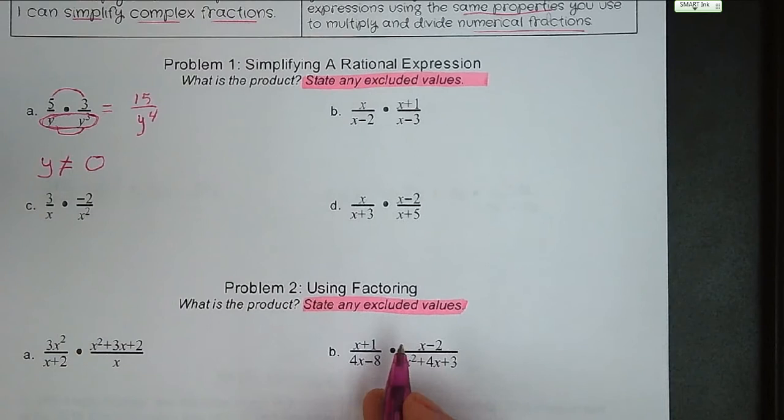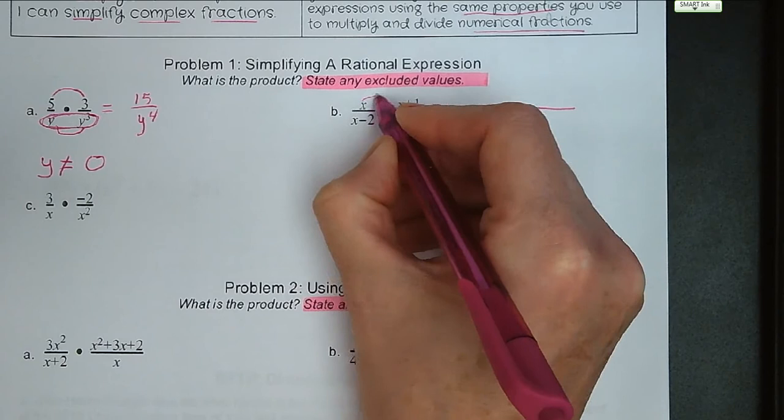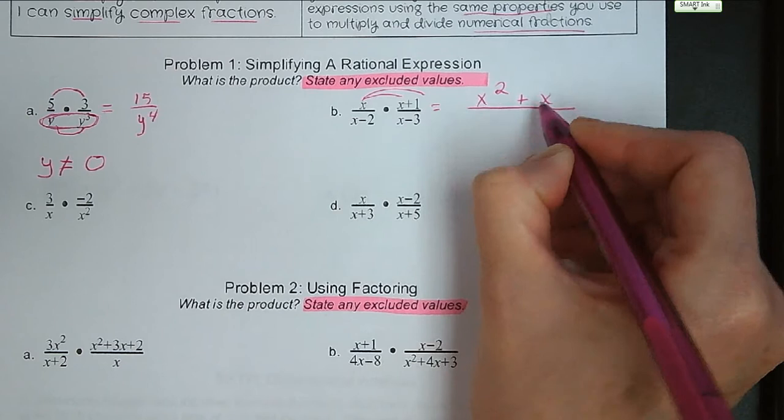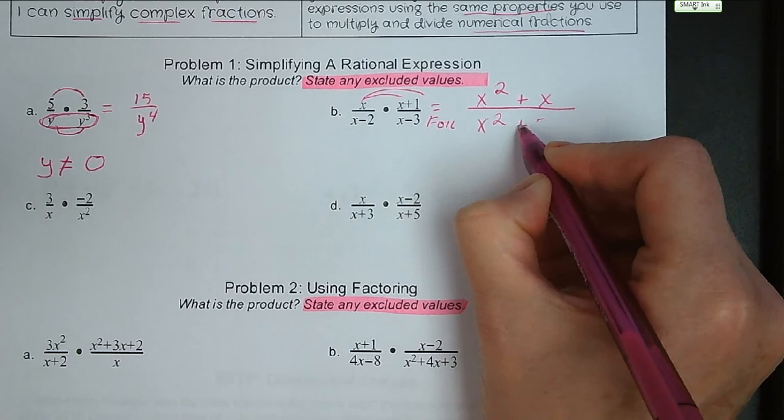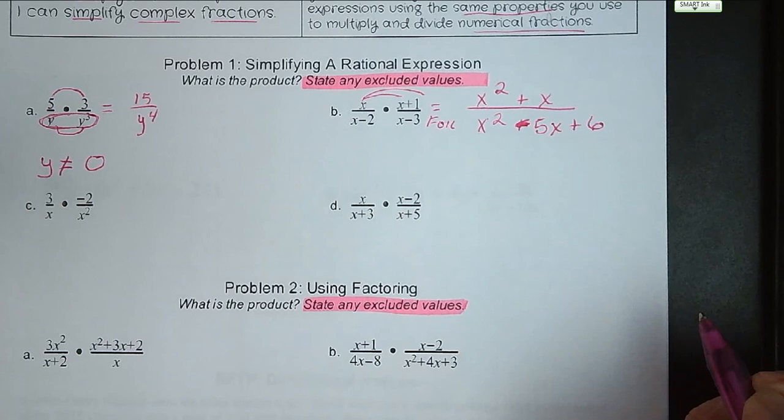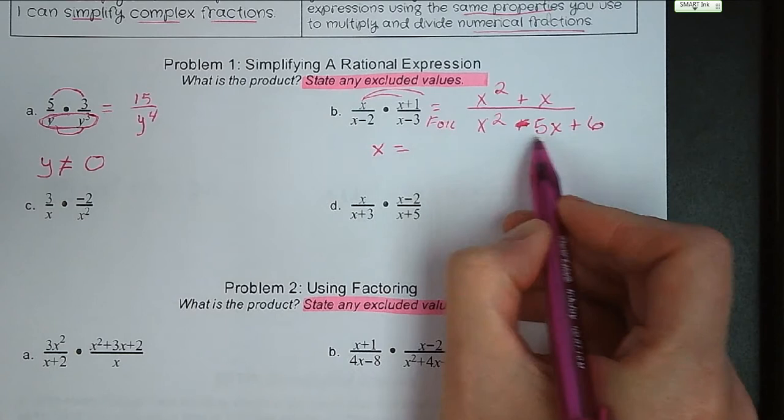Letter B: we're going to multiply across, so we need to distribute x times x plus 1. That's going to give us x squared plus x. And our denominator, we distribute and we FOIL, so we get x squared minus 5x plus 6. Our excluded values are going to be anything that makes our denominator 0, so it's going to be 2 and 3.